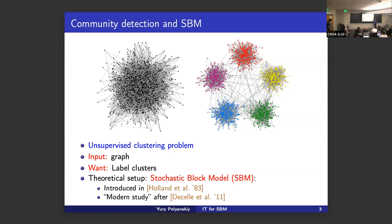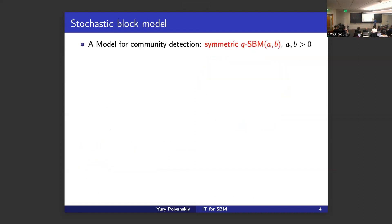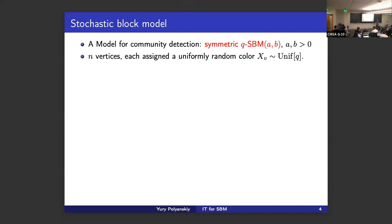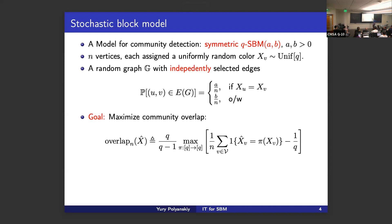Many people look at this in many different ways. There is a particular setting called the stochastic block model. It got a second life after a very influential paper by Decelle, Florent, and others, which produced a lot of statistical physics predictions that many of us are trying to prove since then. What is a stochastic block model? The symmetric Q-SBM with parameters A and B is defined as follows: we have N vertices, each assigned a random uniform label from an alphabet of size Q.